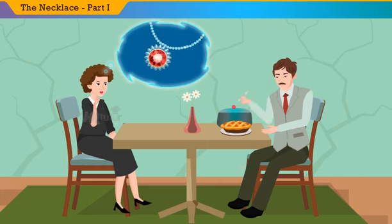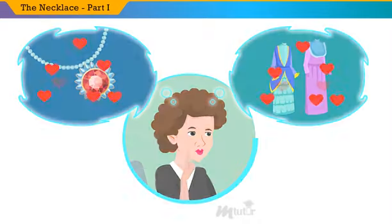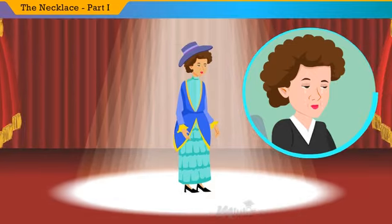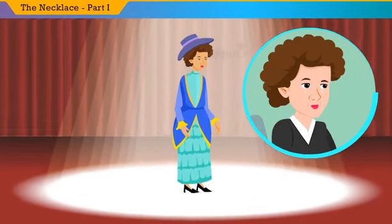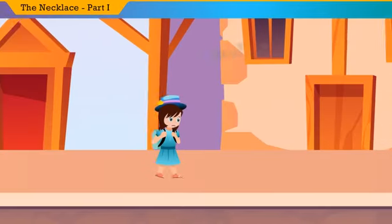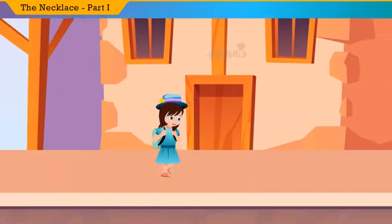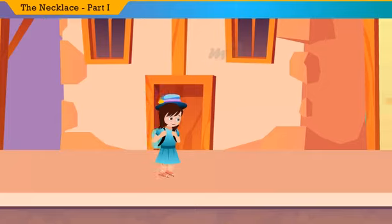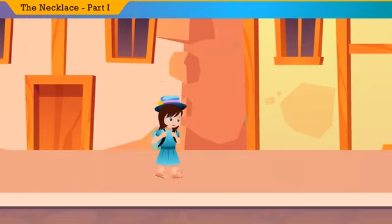She didn't have any expensive gowns or jewelry that she always longed for, and she just loved only those things. Mathilde had a wealthy acquaintance, a convent schoolmate, whom she didn't want to see. Because when she had visited her once, she cried in despair and disappointment for days, for being unable to lead a prosperous life like hers.